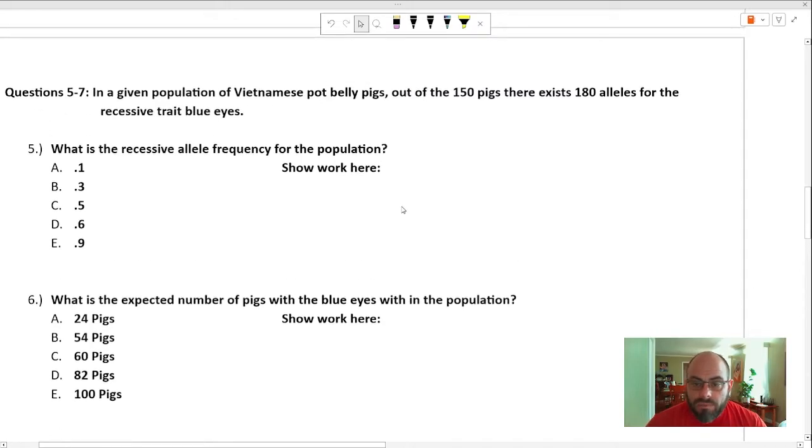Alright, so let's see. In a given population of Vietnamese pot belly pigs - lots of adjectives, all fun. Pigs are fun by themselves, but then you put adjectives on them, more fun. Out of 150 pigs, there exist 180 alleles. Okay, this is a little more harder. 150 pigs, 180 alleles. What do we do with this? Well, 150 pigs, how many alleles does that represent? Every pig has two, right? So that's 300 alleles.